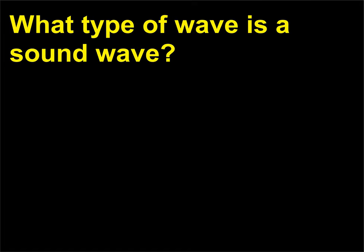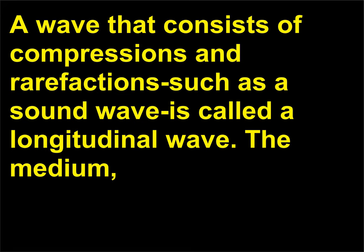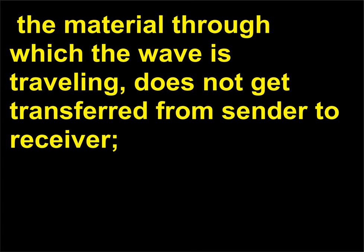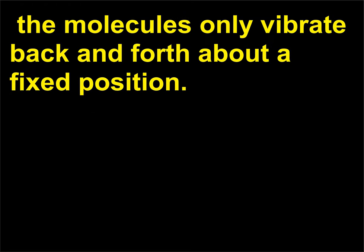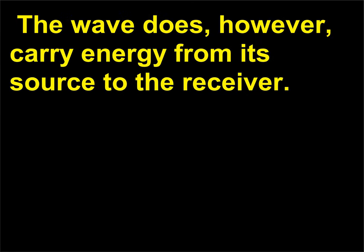What type of wave is a sound wave? A wave that consists of compressions and rarefactions such as a sound wave is called a longitudinal wave. The medium — the material through which the wave is traveling — does not get transferred from sender to receiver; the molecules only vibrate back and forth about a fixed position. The wave does, however, carry energy from its source to the receiver.